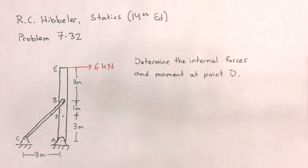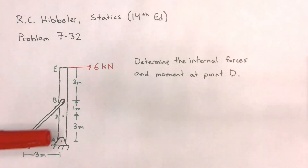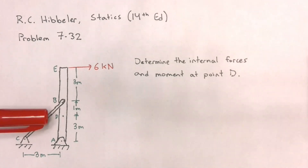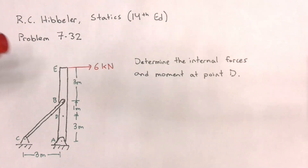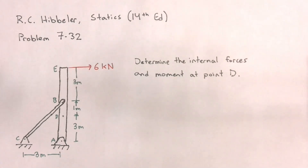Let's look at problem 7-32 from the textbook. This is actually one of the problems I assigned for the homework for this chapter as well. In this problem, we are given a vertical bar that's connected to a two-force member, so another bar, and it experiences a force of 6 kN pushing to the right on point E.